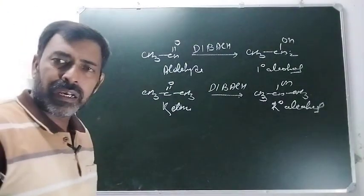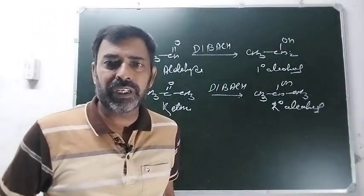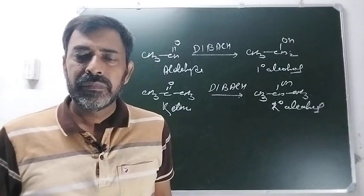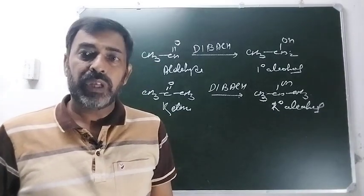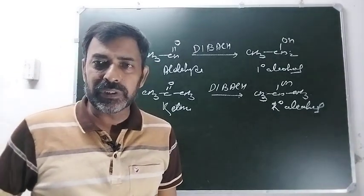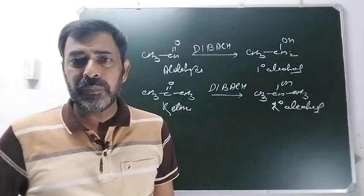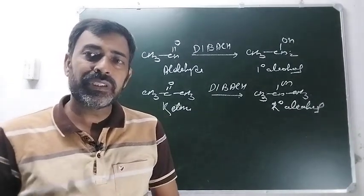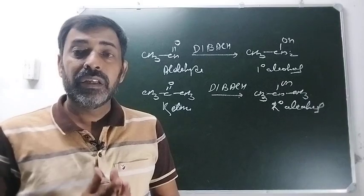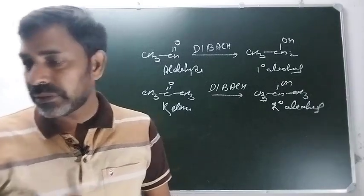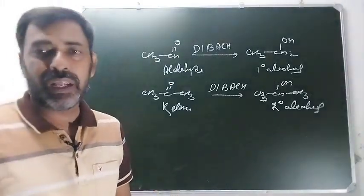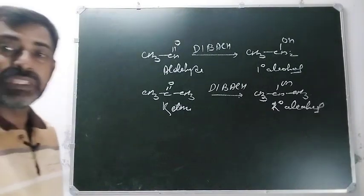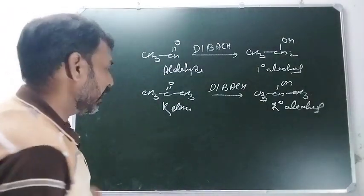Lekin अगर stronger reducing agent के साथ reduce करें, तो alkene का formation होगा। और इस तरह के reductions by name जाने जाते हैं - that means they are name reactions. तो हम पहला name reaction शुरू कर रहे हैं, that is called the Clemmensen reduction.